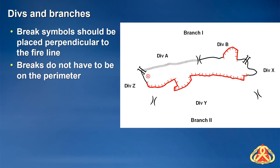Break symbols should be placed perpendicular to the fire line. Breaks do not always have to be placed directly on the fire perimeter — you can see here that two of the division breaks have been placed away from the fire but still perpendicular to the fire line. This method can be used when the fire is anticipated to immediately grow beyond the break symbol, or when multiple points are located in the same area. For example, if a helispot, a drop point, and a division break were all located in the same spot, the break can be moved slightly farther away to reduce clutter and reveal important map features.